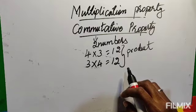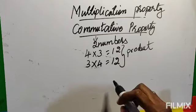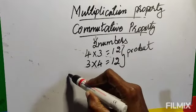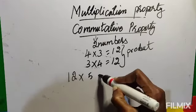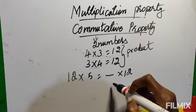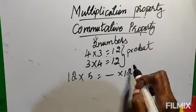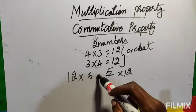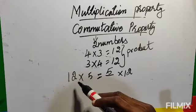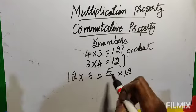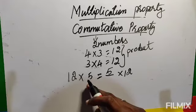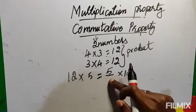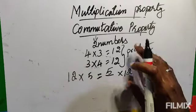Now, before seeing the associative property, let me show you how fill-in-the-blank questions can be asked. Suppose it is given like this: 12 × 5 = ___ × 12. When you change the order, the product doesn't change. So the left side is 12 × 5 and the right side should be 5 × 12. You look at the equal sign in the middle, check both sides — the same numbers should be there in any order. 12 is there on both sides, 5 is missing on the right side, so you write 5.